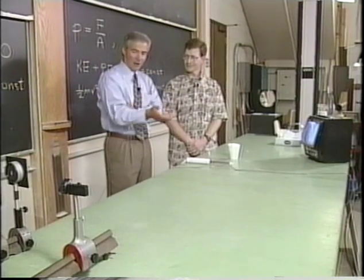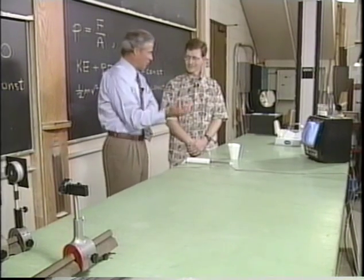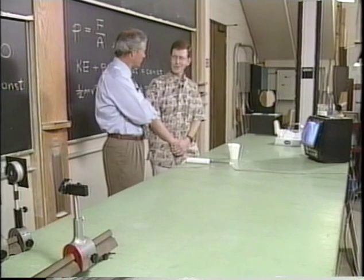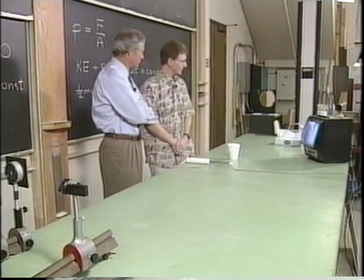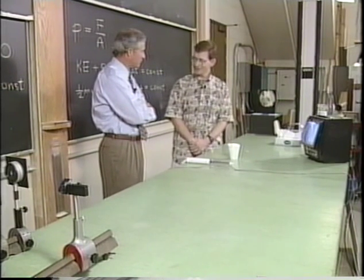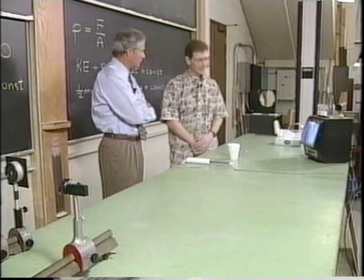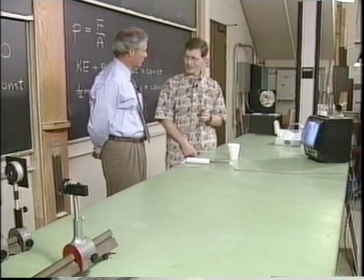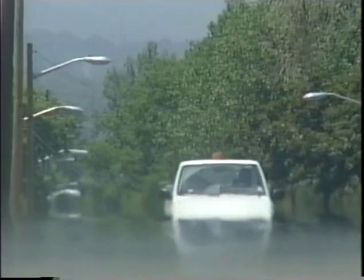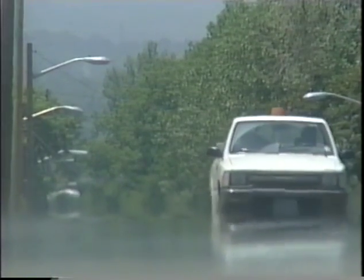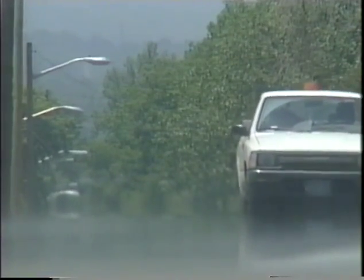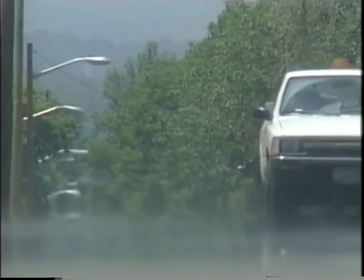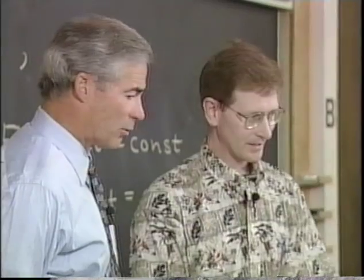Mike, you've set up an elaborate experiment here. What are you trying to show? Well, we've got something called Schlieren imaging. This is a technique for imaging very small changes in the temperature of the air — like on a hot day when you're looking down the road, you can see the heat waves shimmering off the road. We're going to magnify that effect greatly with this technique, right here in the lab.